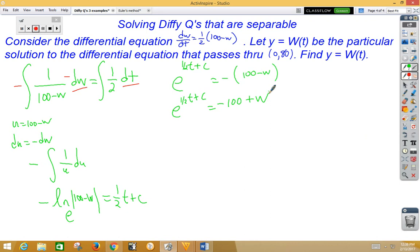Well since we're solving for w, let's go ahead and add that 100 over to the other side. And remember, we can move that c as a big C out in front, so we can go ahead and go 100 plus Ce to the 1/2 t is equal to w.